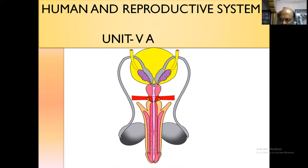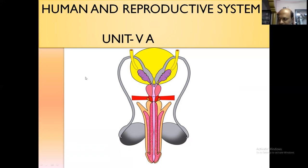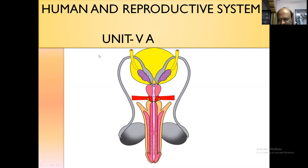After completing this session, students, you may learn to identify the male reproductive system and differentiate it with the female reproductive system. As you know, the female reproductive system was explained in the earlier class by Prasanthi ma'am. Today, I would like to explain in detail the human male reproductive system. Among the key points, we discuss one by one.